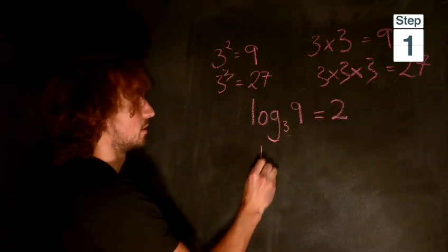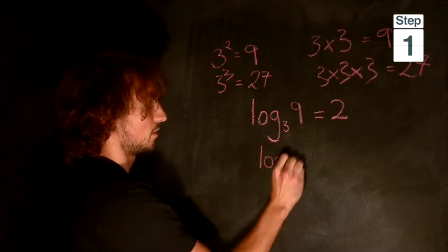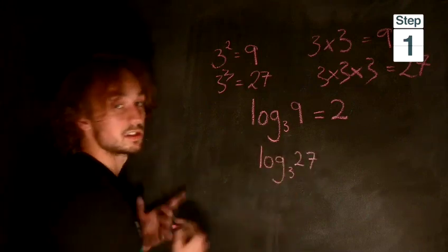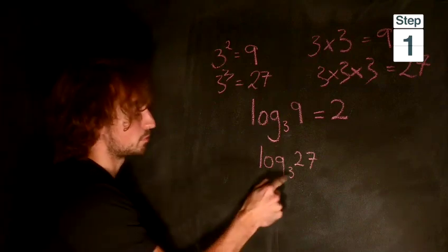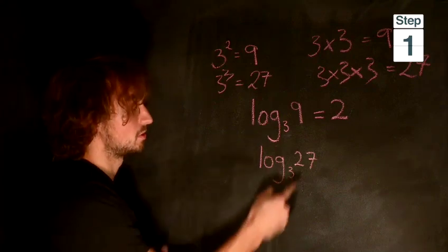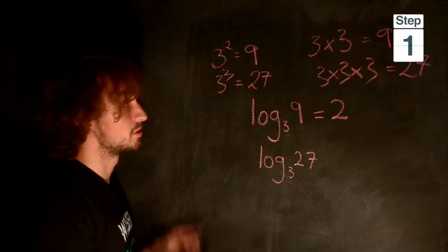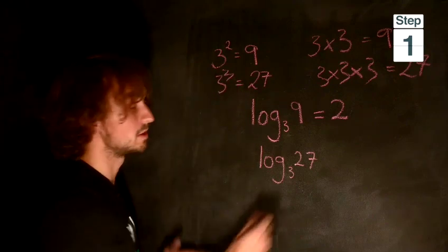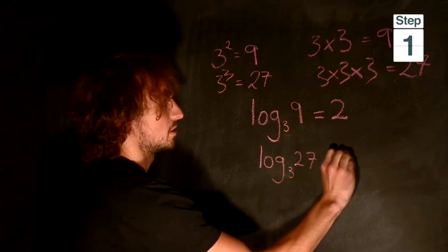So equivalently, log base 3 of 27. You just have to say it to yourself: 3 to the power of what is equal to 27? We know that 3 cubed or 3 to the power of 3 is 27, so the answer is 3.